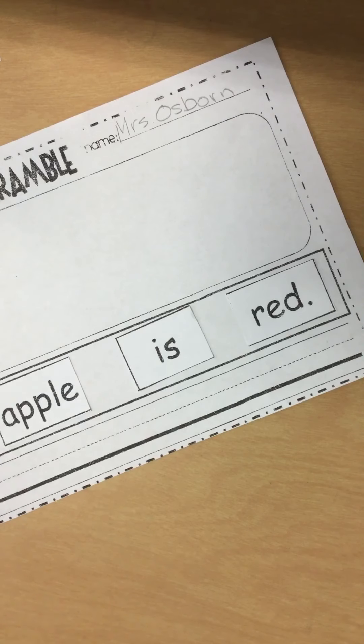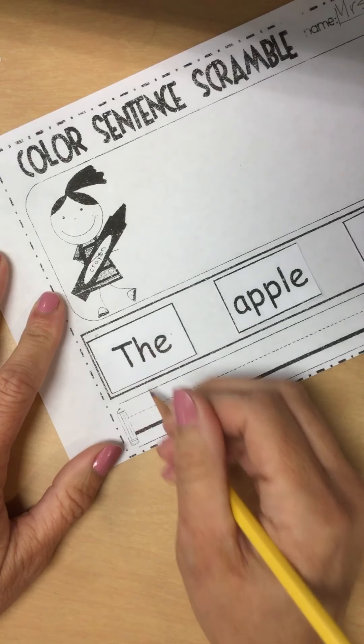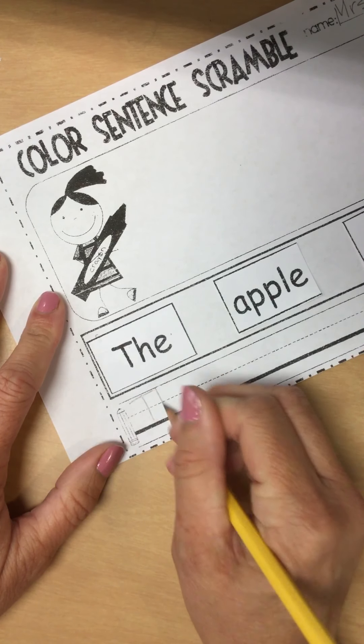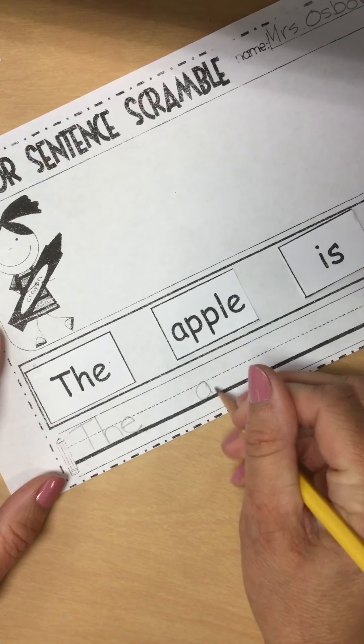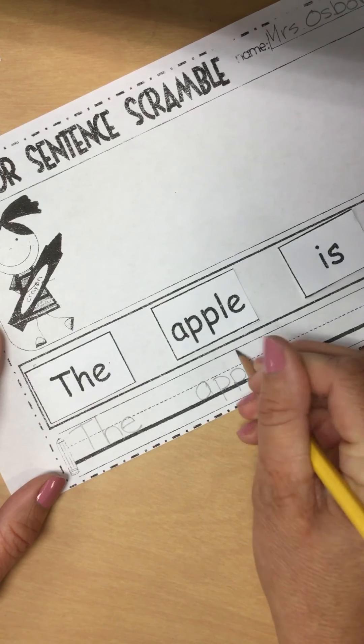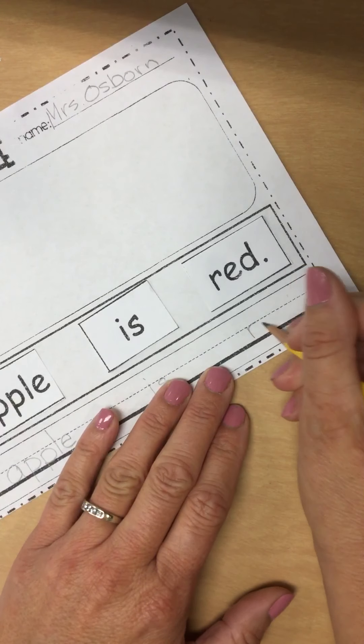now I need to draw my red apple. I need to write my sentence. So I'm going to take my pencil, trace my word, or not trace, write the word neatly at the bottom. The, and then my word apple. And I'm just writing it exactly the way I see it on that paper that I cut out is red.